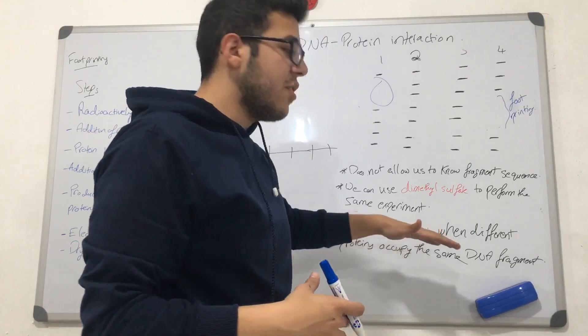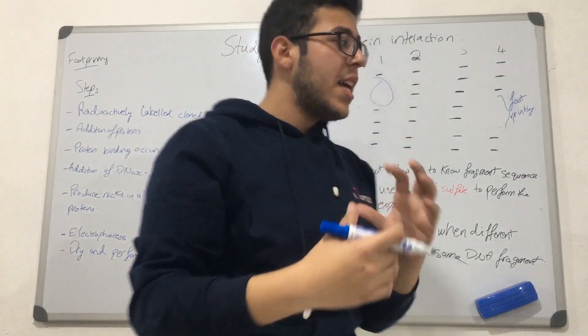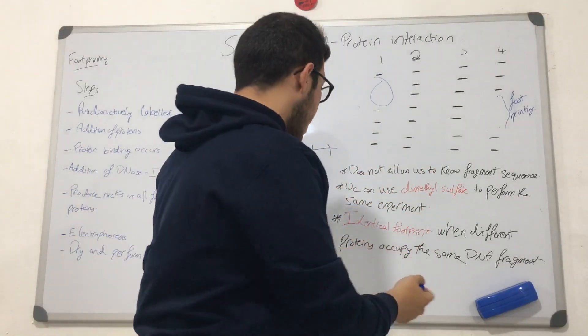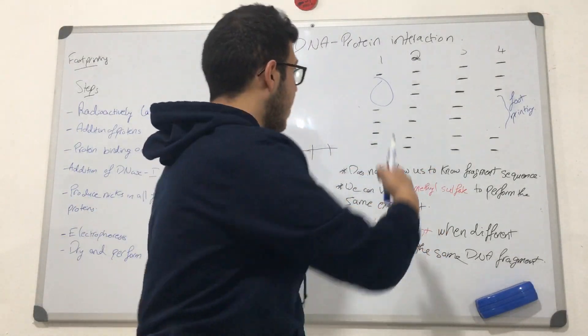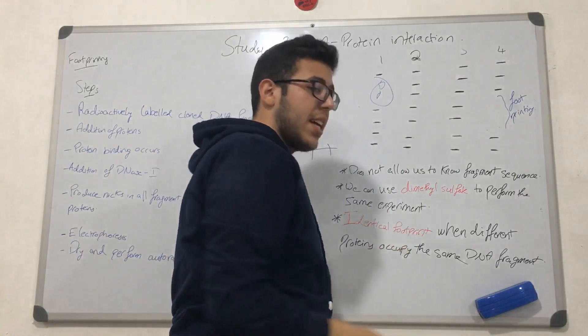Identical footprint is essentially when we have two different proteins that are bound to the same DNA fragment. We're going to get the same DNA footprint here, even though we have two different proteins and not one. This is called the identical footprint.